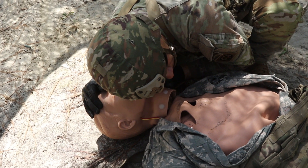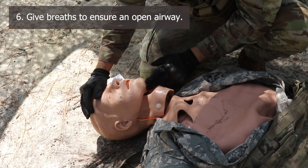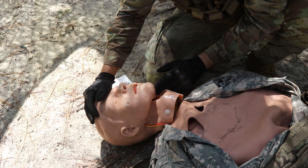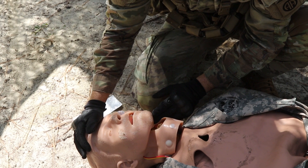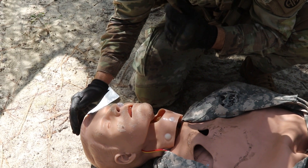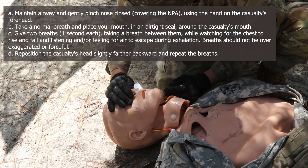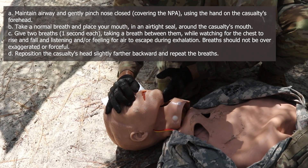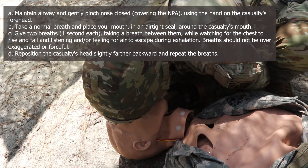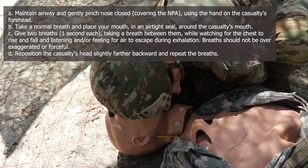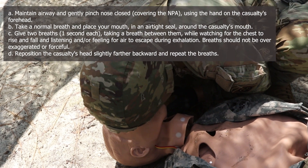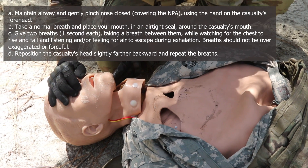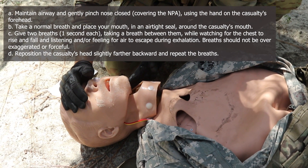The grader will state the casualty is still not breathing. You are next going to give breaths to ensure there is an open airway. Insert a face shield, if available, into the casualty's mouth with the short airway portion over the top of the tongue and flatten the plastic sheet around the mouth. Maintain airway and gently pinch the nose closed, covering the NPA using the hand on the casualty's forehead. Take a normal breath and place your mouth in an airtight seal around the casualty's mouth. Give two breaths, one second each, taking a breath between them, while watching for the chest to rise and fall and listening and or feeling for air to escape during exhalation. Breaths should not be over-exaggerated or forceful.